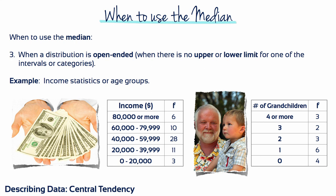It's also better to use the median when a distribution is open-ended. In other words, when there is no upper or lower limit for one of the intervals or categories.